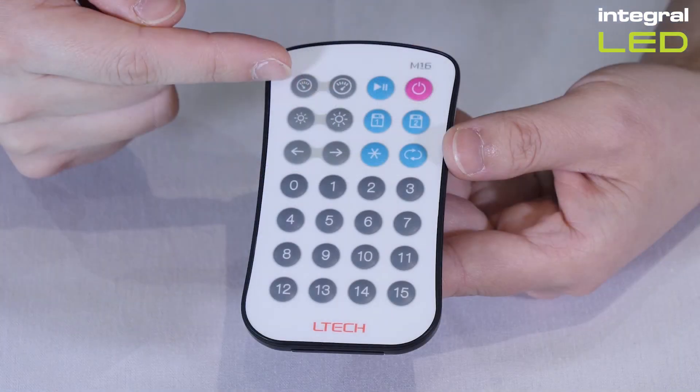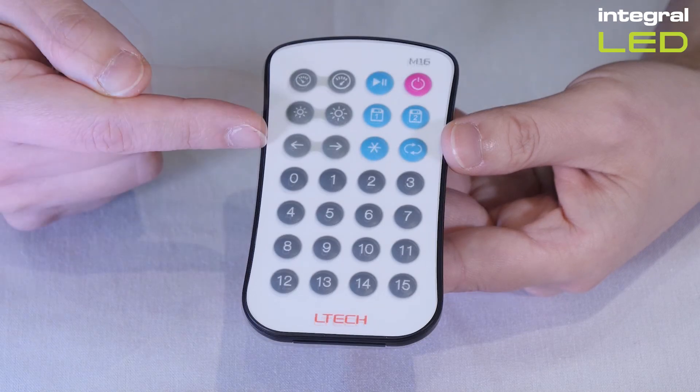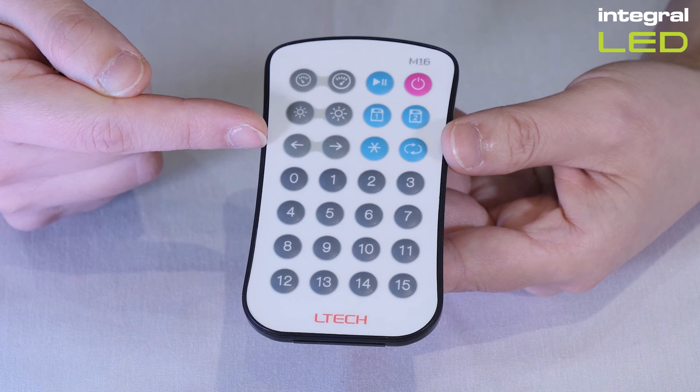These two buttons on the top left of the remote control the speed of the light effect. These two buttons control the brightness of the strip. These arrow buttons control the direction of the light effect.